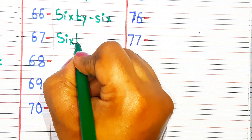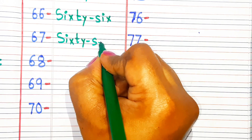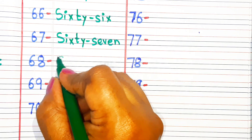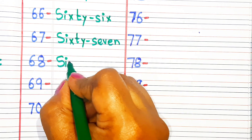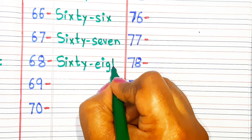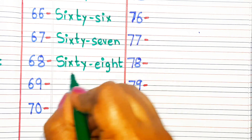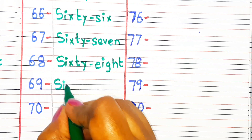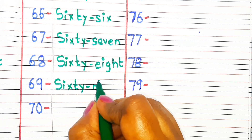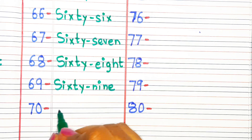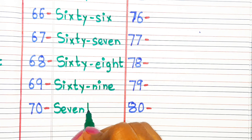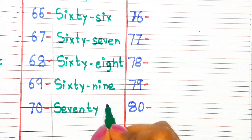S-I-X-T-Y-S-E-V-E-N 67. S-I-X-T-Y-E-I-G-H-T 68. S-I-X-T-Y-N-I-N-E 69. S-E-V-E-N-T-Y 70.